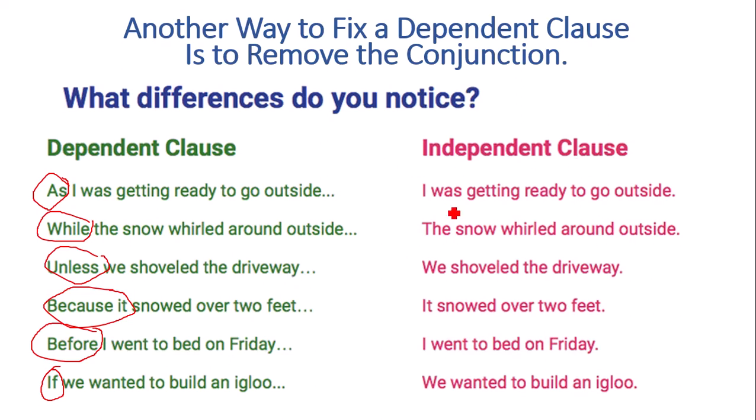So here are now our independent clauses. I was getting ready to go outside. The snow whirled outside. We shoveled the driveway. It snowed over two feet. I went to bed on Friday. We wanted to build an igloo. Those are all complete thoughts. They're independent clauses. We have our subjects: snow, we, it, I, and another we. And then we have our verbs: was getting ready, to go, whirled, shoveled, snowed, went, and wanted to build. So all of those now have a subject and a verb and just getting rid of or deleting that dependent clause word did the trick. Turned it from a fragment into a complete sentence.